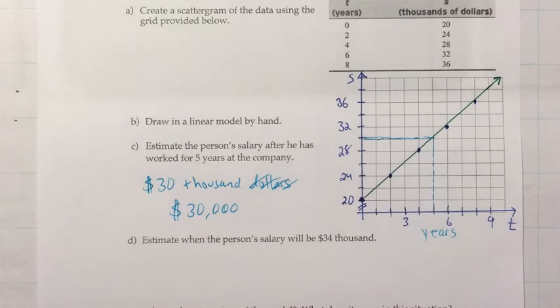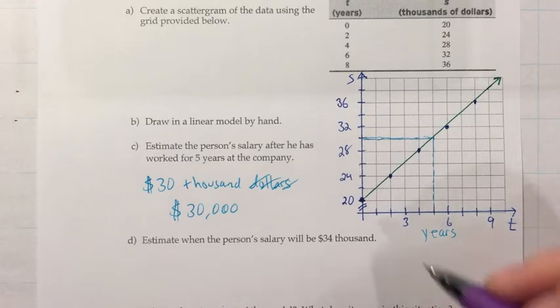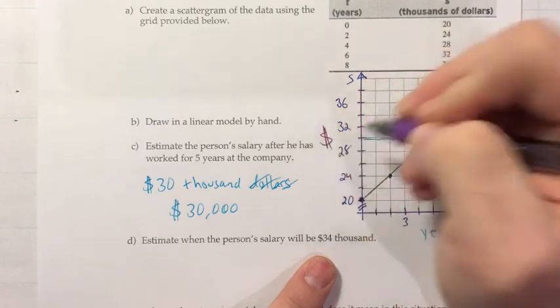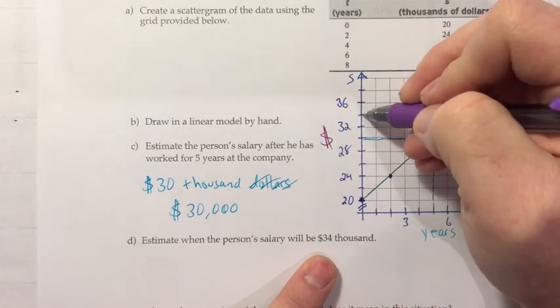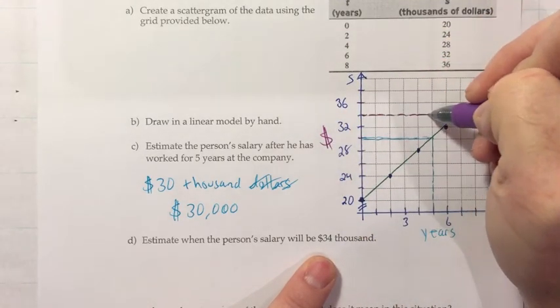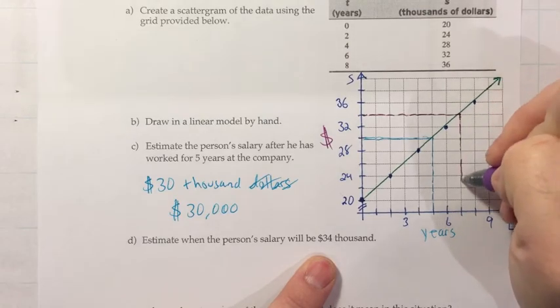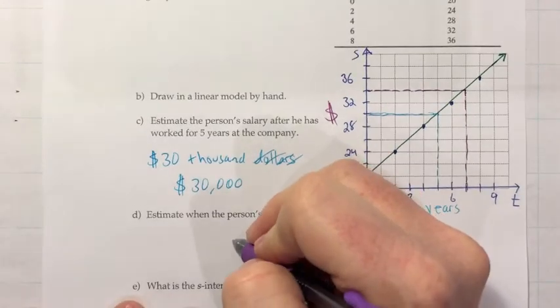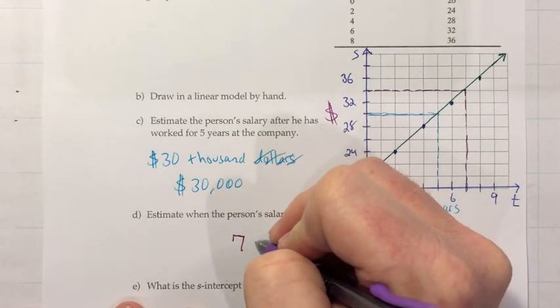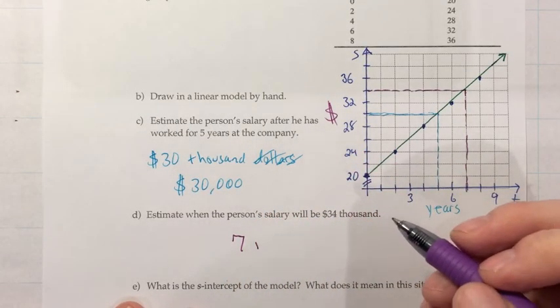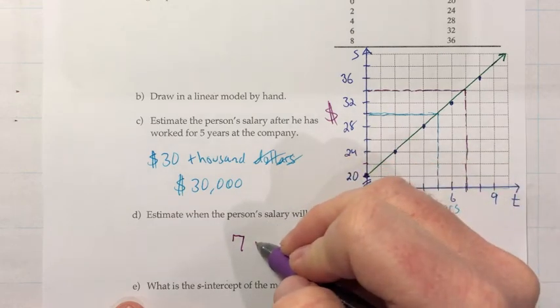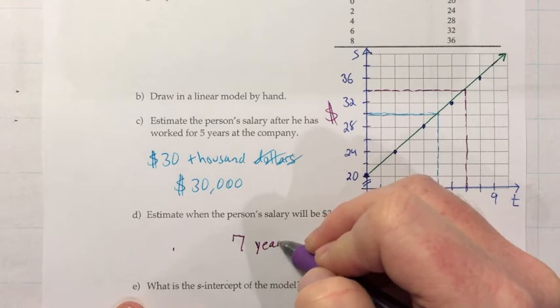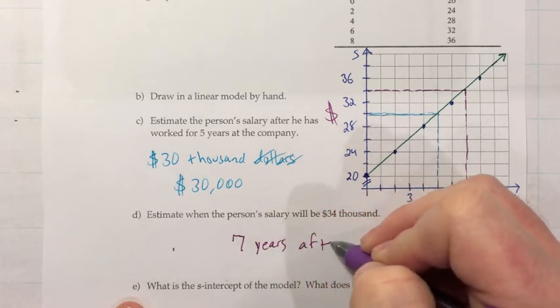Now estimate when the person's salary would be $34,000. So to do that, since this is an amount of money, which is on the vertical, we'll go to 34. We'll go across until we hit the graph. And then we'll drop down to see where that was. And that looks like six, seven. So it looks like that would happen at seven years. And T was the number of years that they had worked at the company. So seven years after starting, maybe would be a good way to say that.